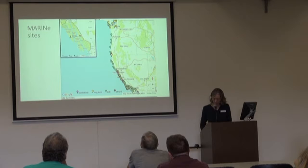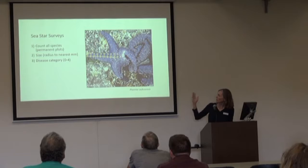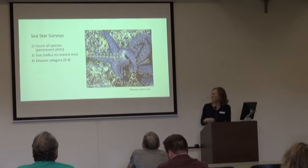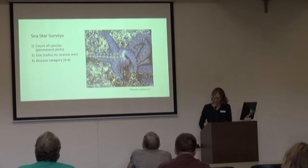And at each of these sites, as many of you have done, we count and measure. We get what we call the radius of the stars — the distance from the middle of the star to the tip of the longest or straightest arm. Oftentimes they're not nicely laid out. And then we also get disease categories for the stars.